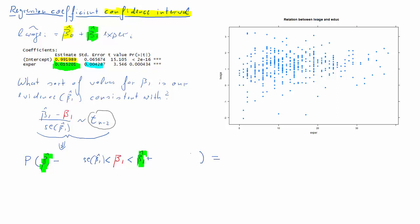What do we subtract and add? We subtract and add something that involves the standard error of beta 1 hat — that's this blue value here. That is one element of the term being subtracted and added. The second element of that term is a factor that comes from this distribution — the t-distribution with n minus 2 degrees of freedom.